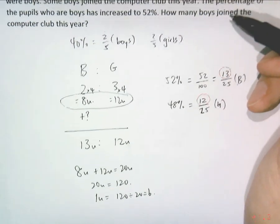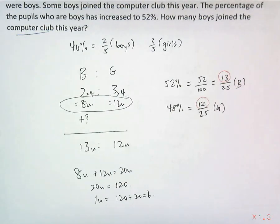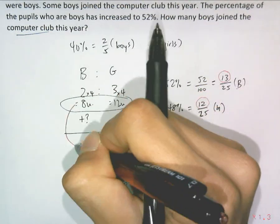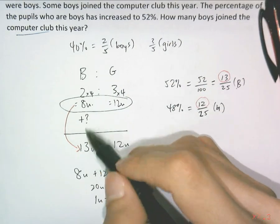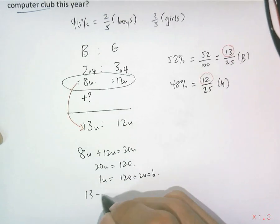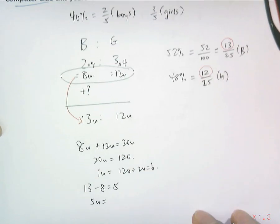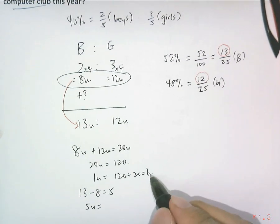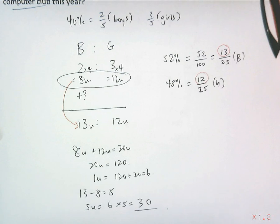How many boys joined the club this year? Find the difference first. From 8 units to 13 units is a difference of 5 units (13 minus 8). So we're finding 5 units as the answer. 1 unit is 6, so 5 units is 6 times 5, which equals 30 boys joined the club.